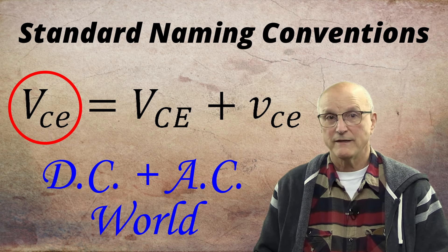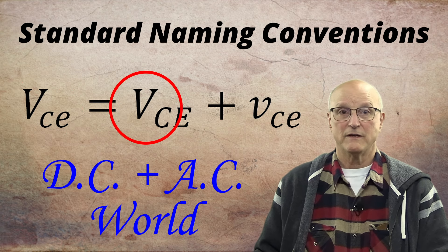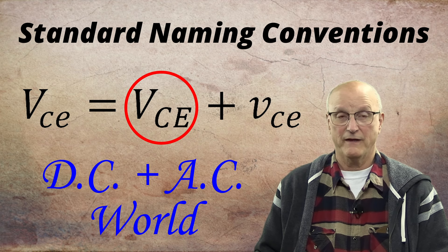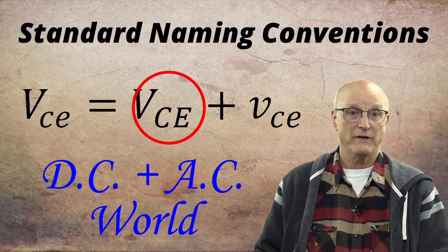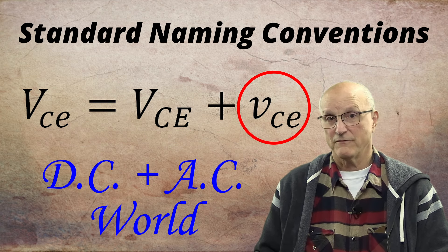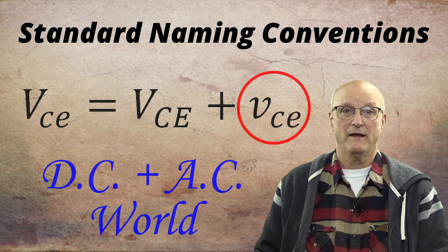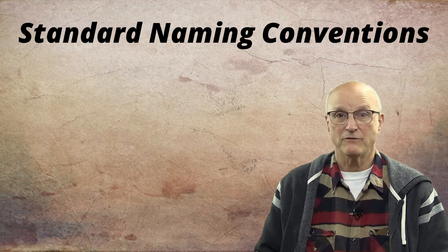What this means is that the combined value of the DC and AC worlds, that's the capital V lowercase CE, is equal to the DC world value, that's the capital V sub-capital CE, plus the AC world value, which is all in lowercase VCE. I will be adhering to this standard nomenclature in this video series.